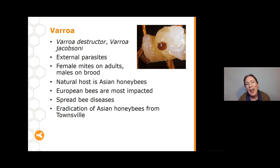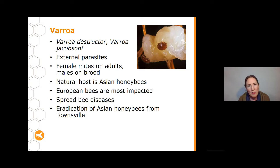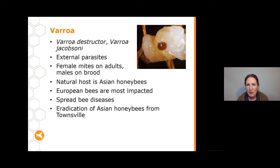Varroa has two species: Varroa destructor and Varroa jacobsoni. Varroa destructor is generally the nastier one with a much bigger impact on bee hives. Both are external parasites, living on the outside of bees. Female mites live on both larval and adult stages of bees, while males are only found on the brood. The natural host for Varroa mites has historically been Asian honeybees, and it's only fairly recently that they've switched over to European honeybees. As with many pests and diseases, when they switch to a new host they often have much bigger impacts on that new host, which is why Varroa causes such big problems when it comes into new areas.